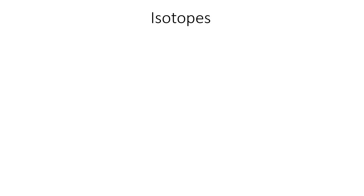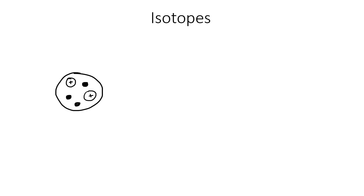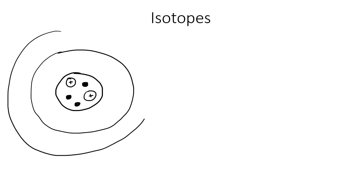In this lesson, we're going to talk about isotopes. It's a pretty cool concept. So let me quickly draw us an atom. Remember that with an atom, you've got your center nucleus part, which has protons — protons are positive — and then we've also got neutrons, which don't have a charge at all. And then on the outside, we've got these energy levels, and in those energy levels, that's where you would find your electrons, which are negatively charged.